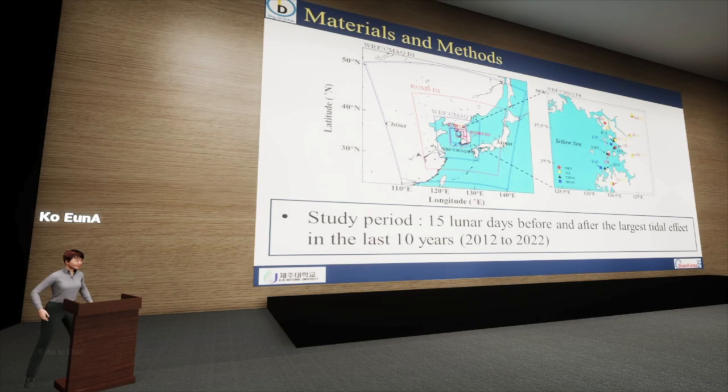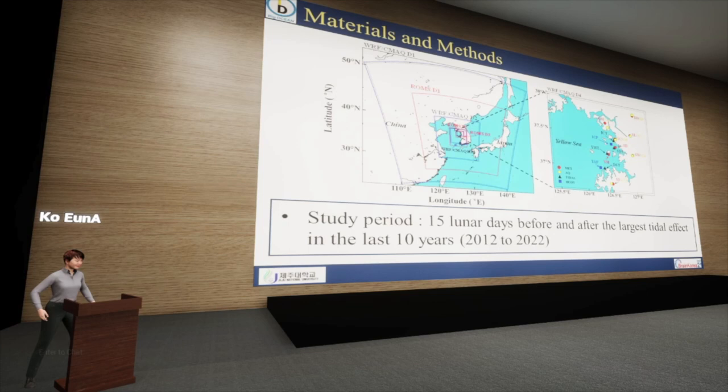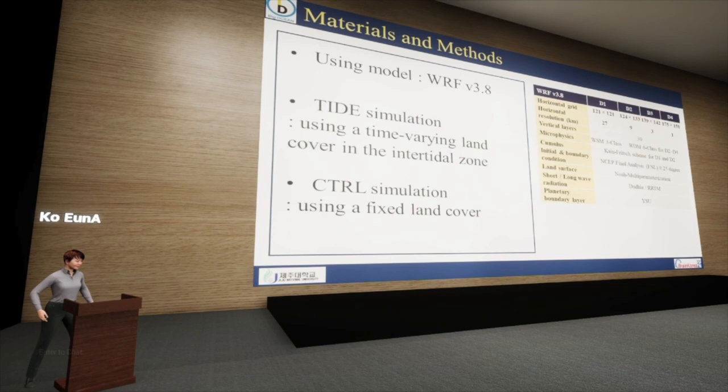For this study, our focus was centered on the intertidal zone of Gyeonggi Bay, which represents the largest intertidal zone along the western coast of South Korea. The study period was selected to be the three days before and after the 15th day of the lunar calendar when the tidal influence is greatest. The meteorological model, the WRF model version 3.8, was employed to assess the impact of time-varying land cover due to tides in the intertidal zone on coastal meteorological changes.